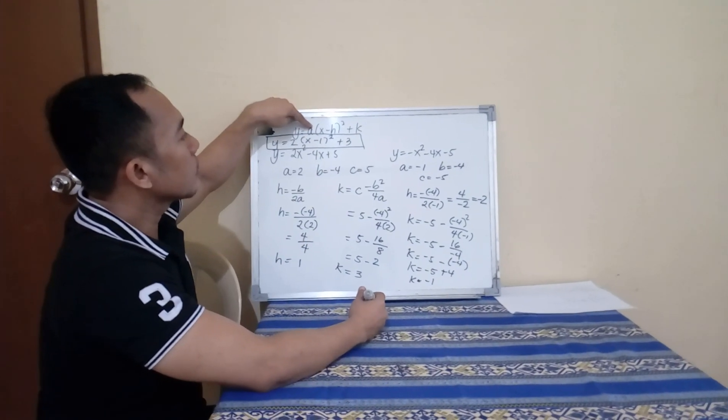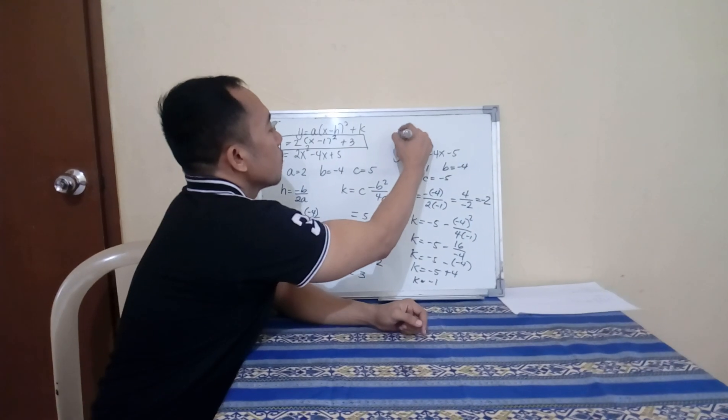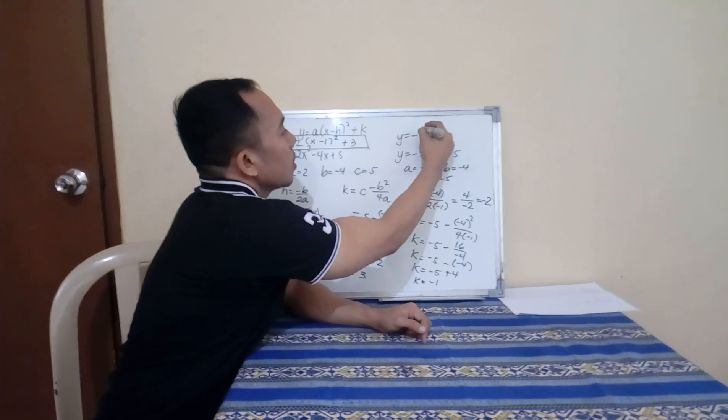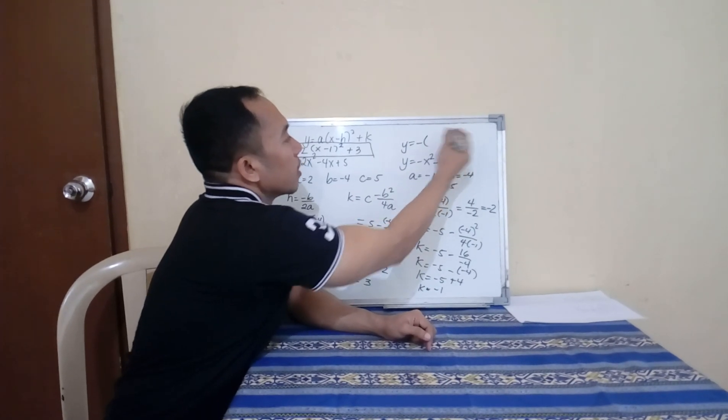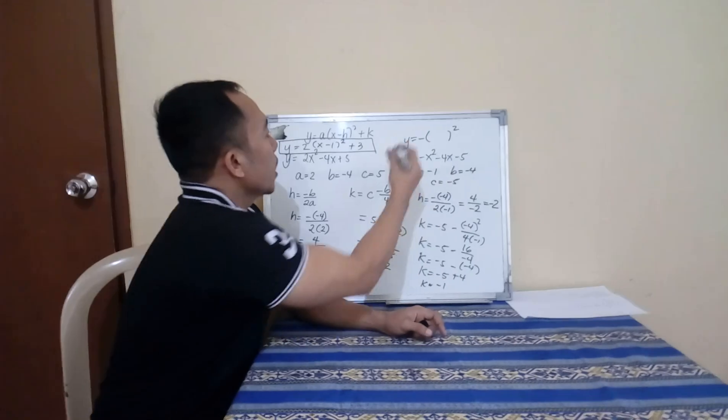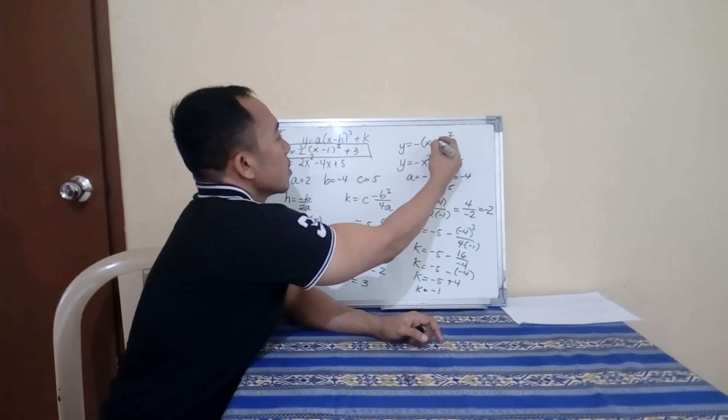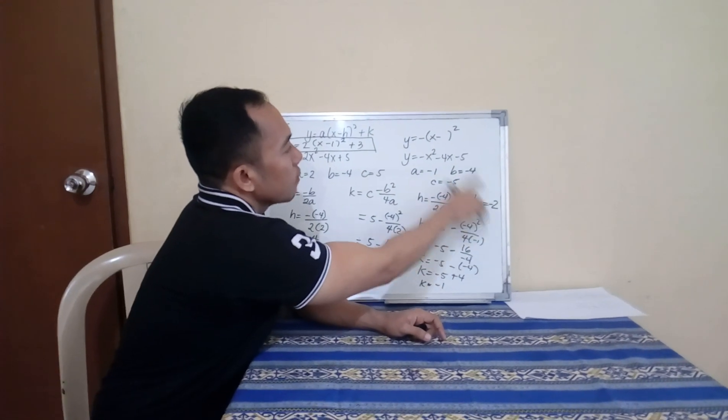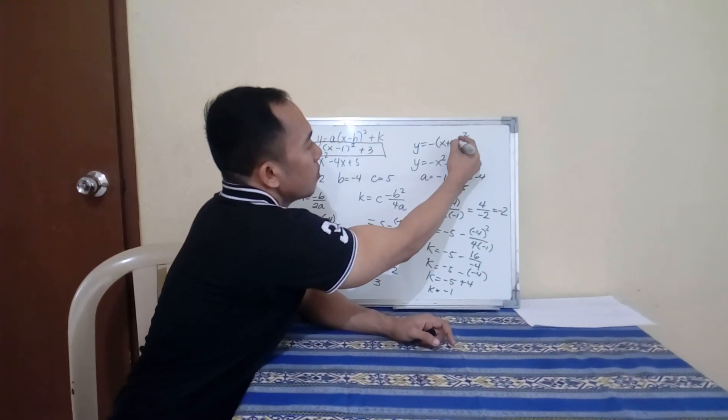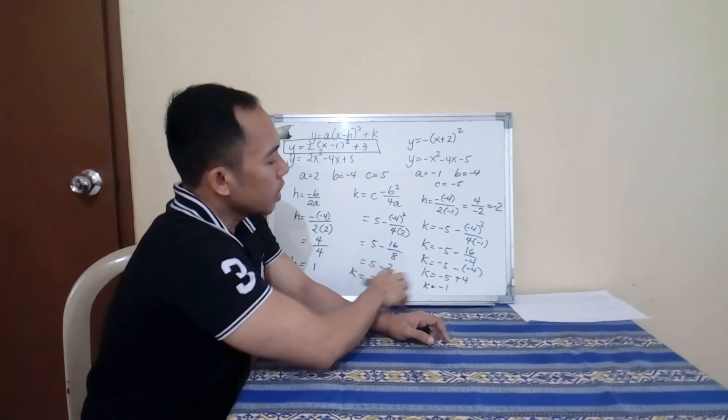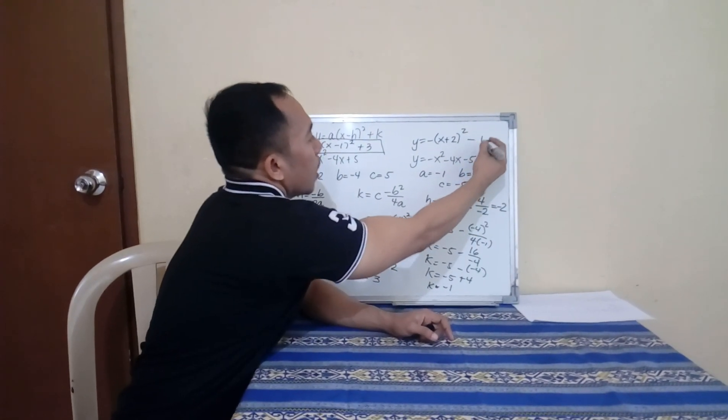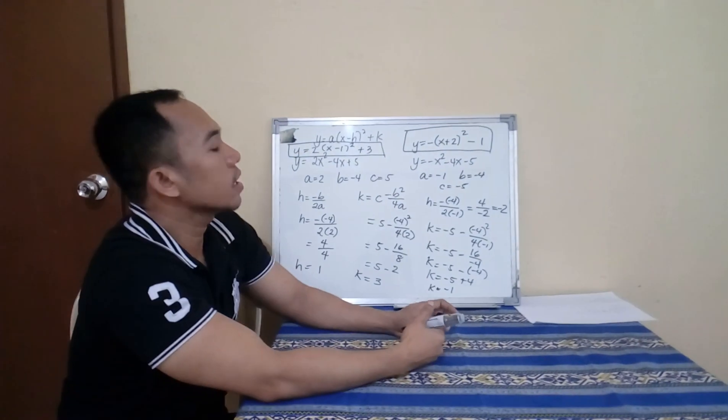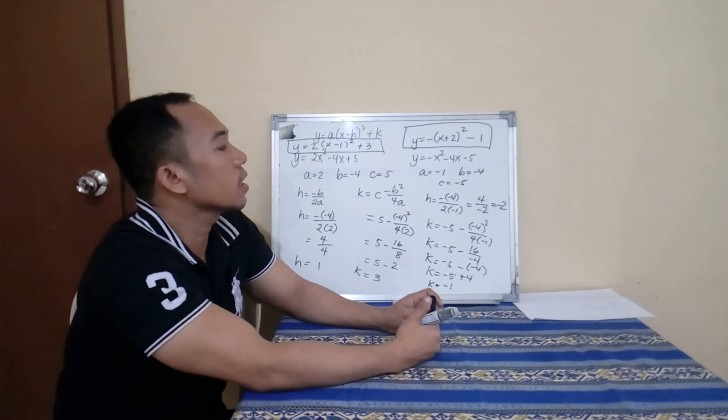Substituting here your A, your H, and your K. Your vertex form now is Y equals, your A is negative 1, so just negative 1. Then copy X minus, your H is negative, so times negative becomes positive 2. Then your K is negative 1. This is now your vertex form for Y equals negative X squared minus 4X minus 5.